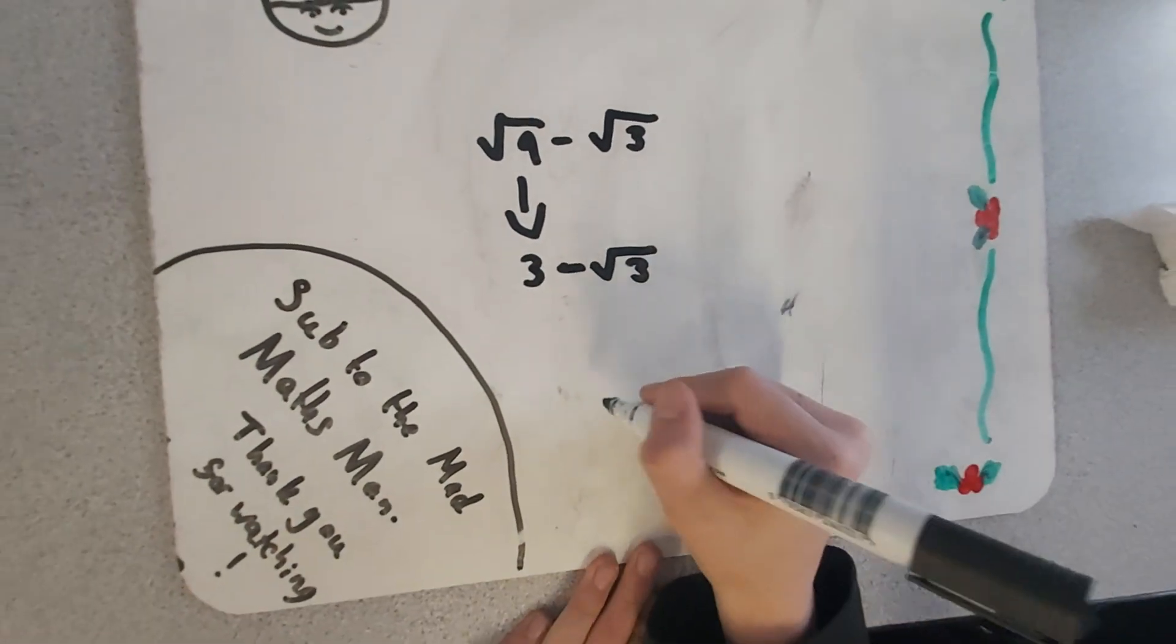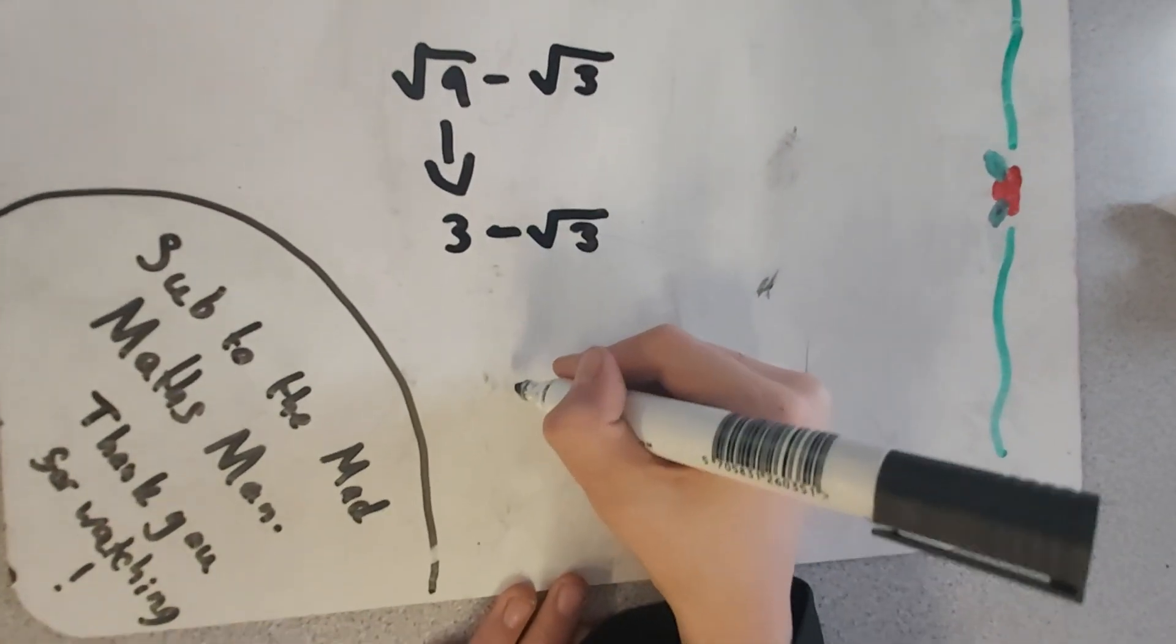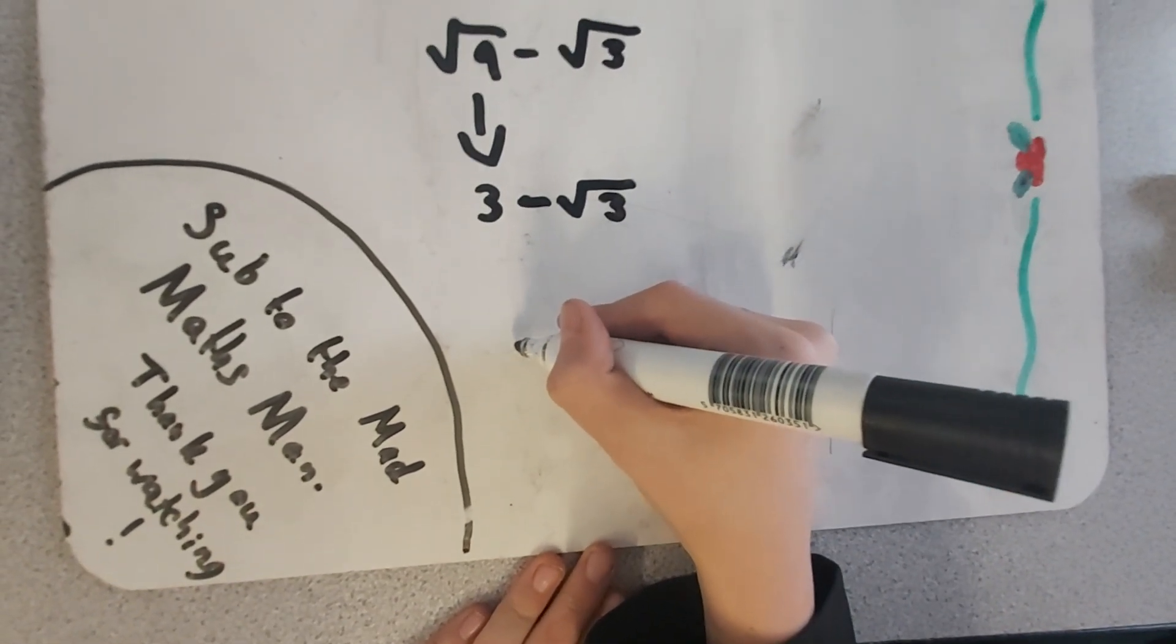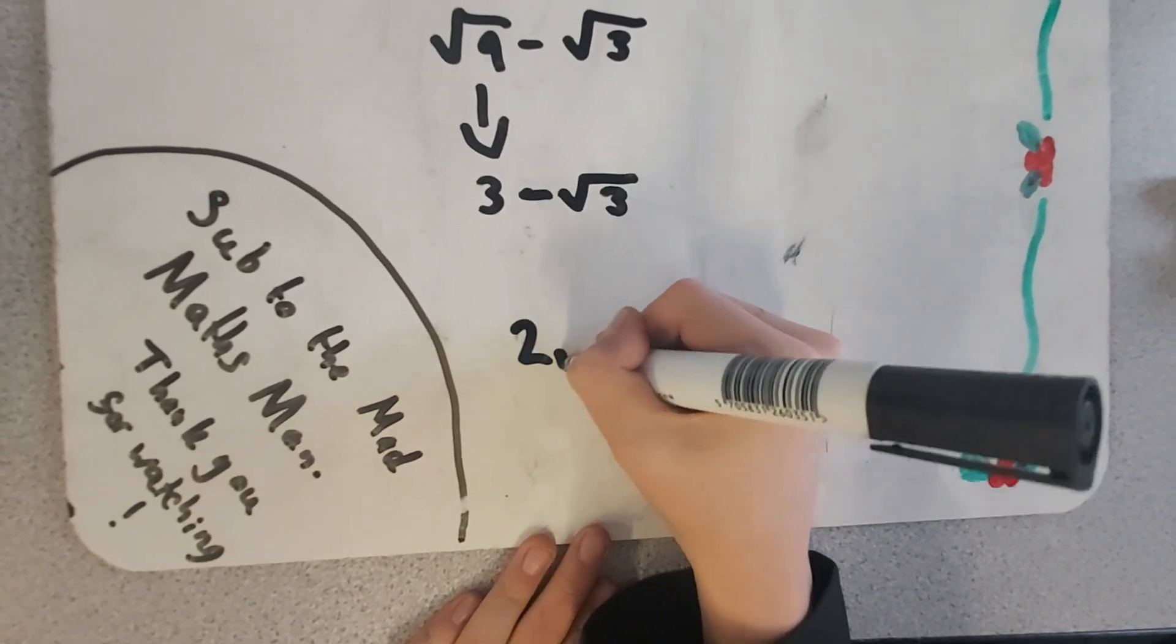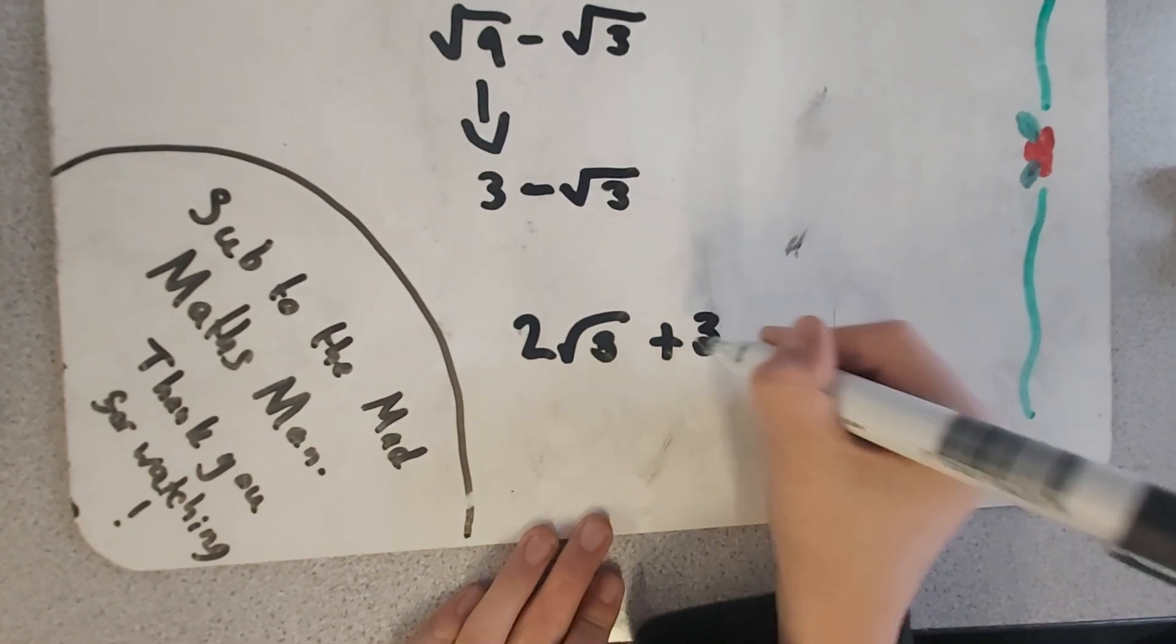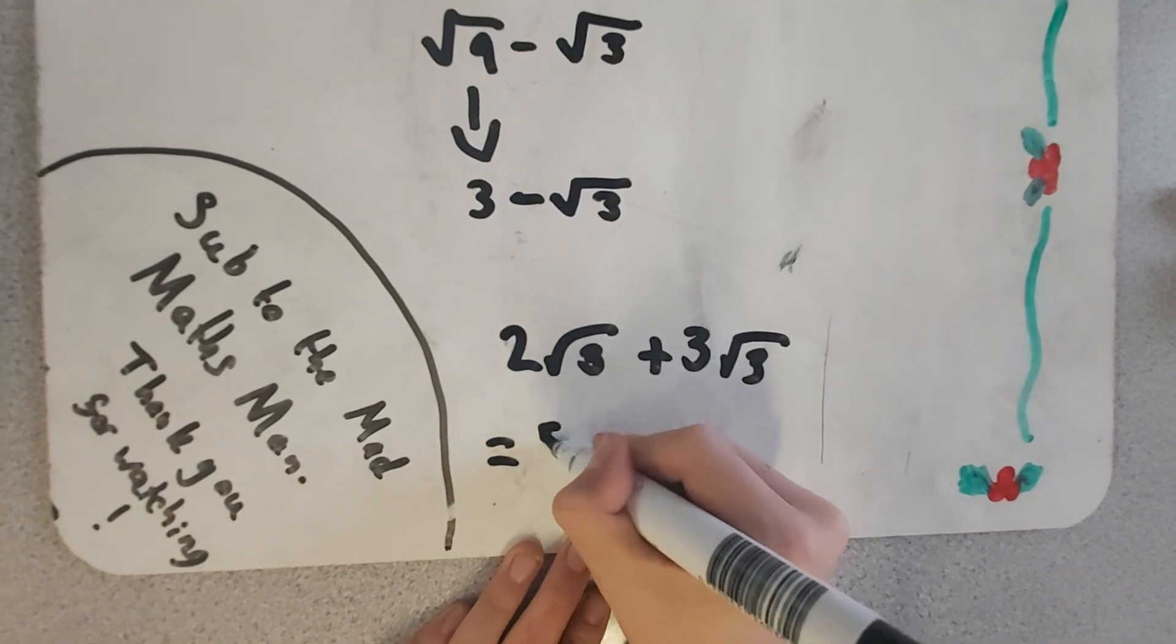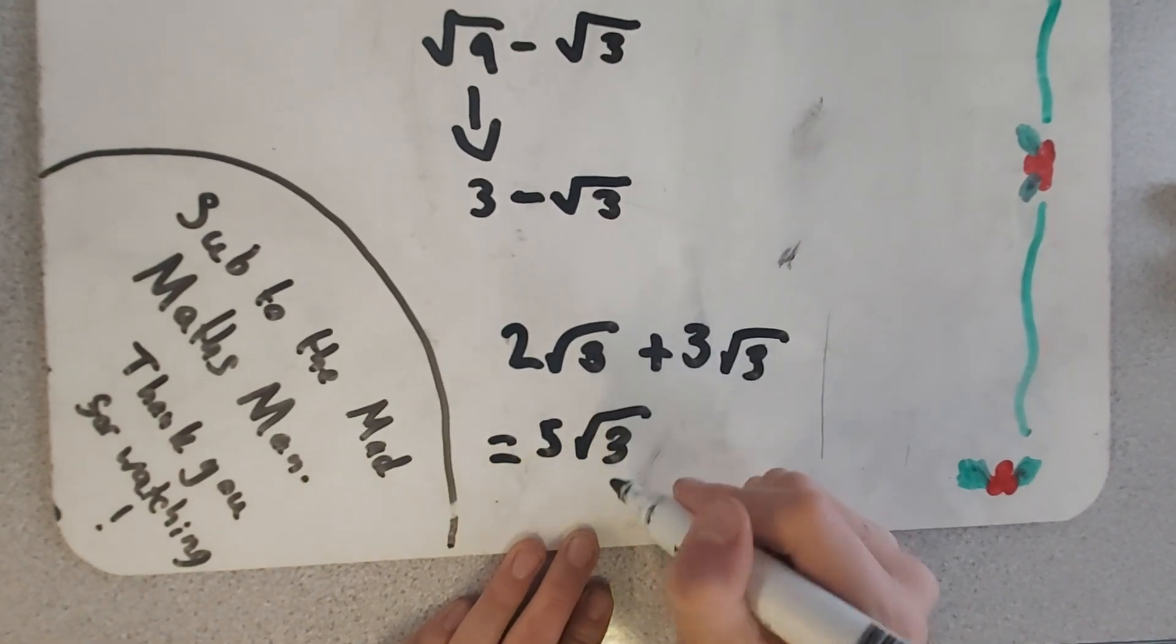Now we will do addition. So what we do, for example, we write 2 root 3s plus 3 root 3s which would equal 5 root 3s. So you just add the whole numbers. Thank you for listening and subscribe to the Mad Maths Man.